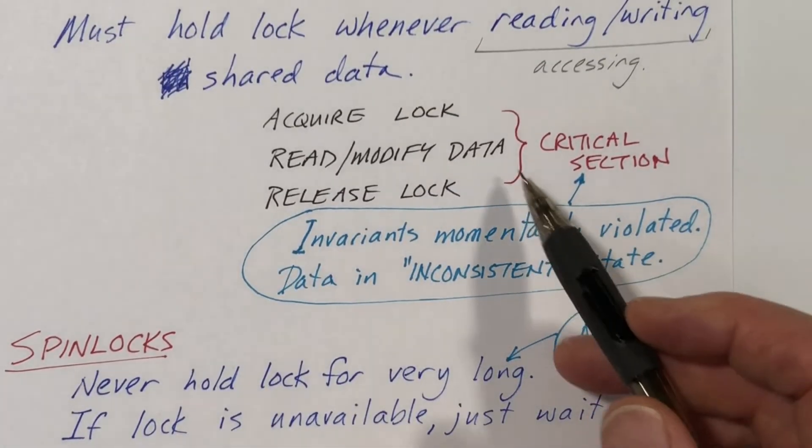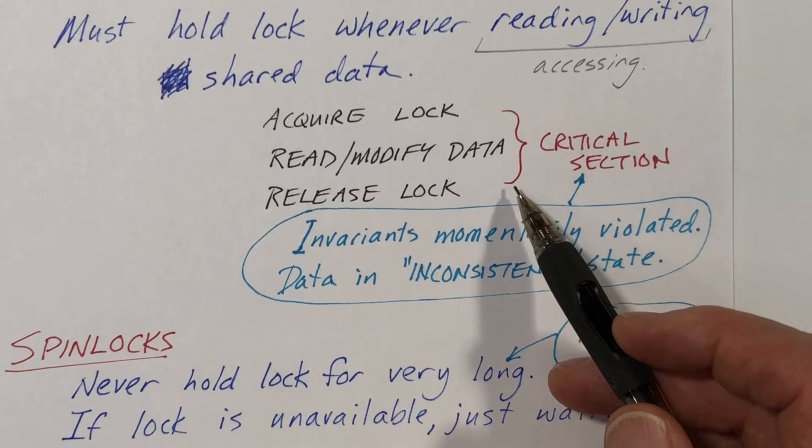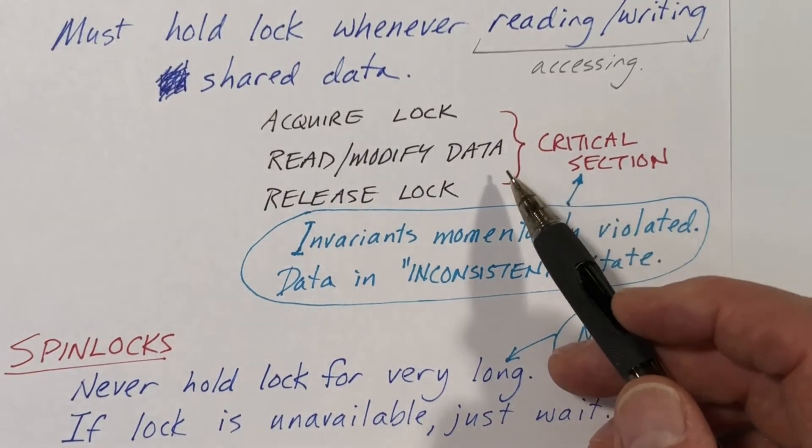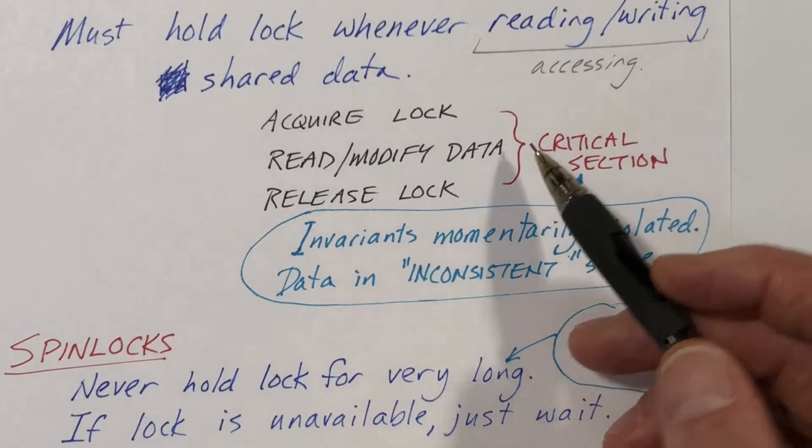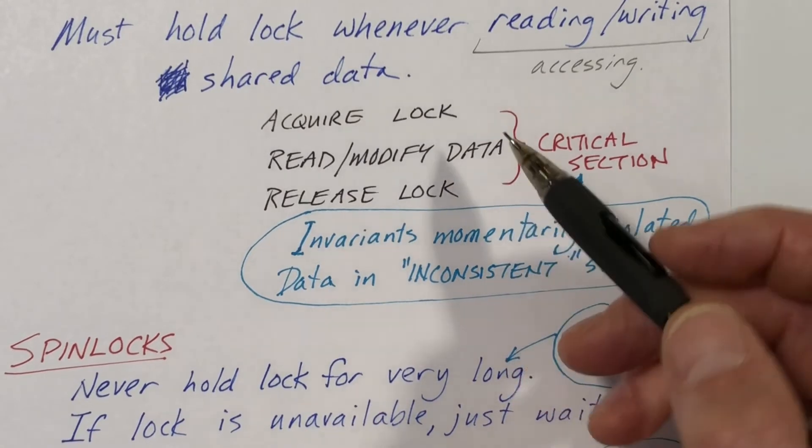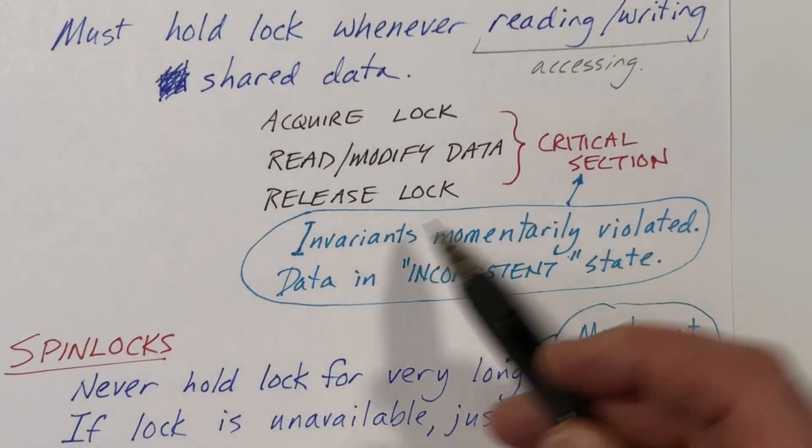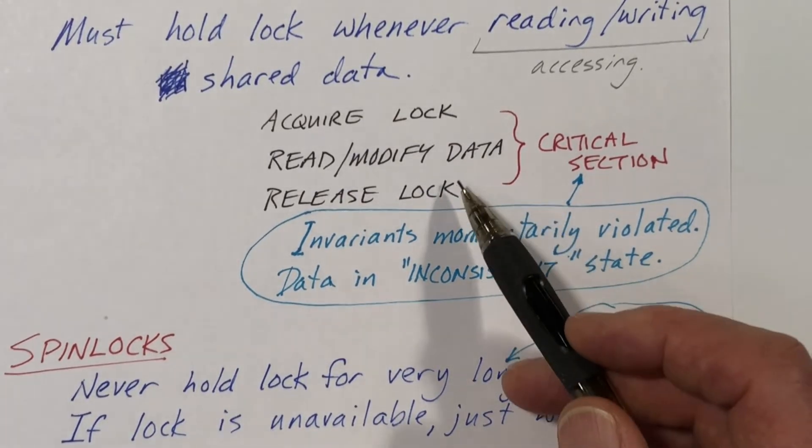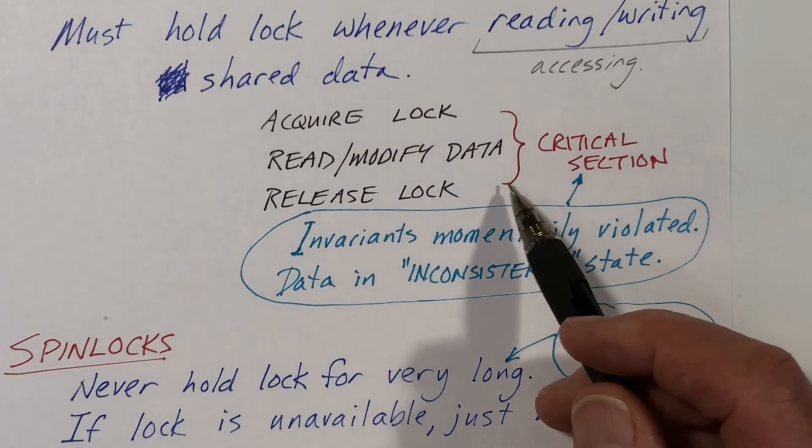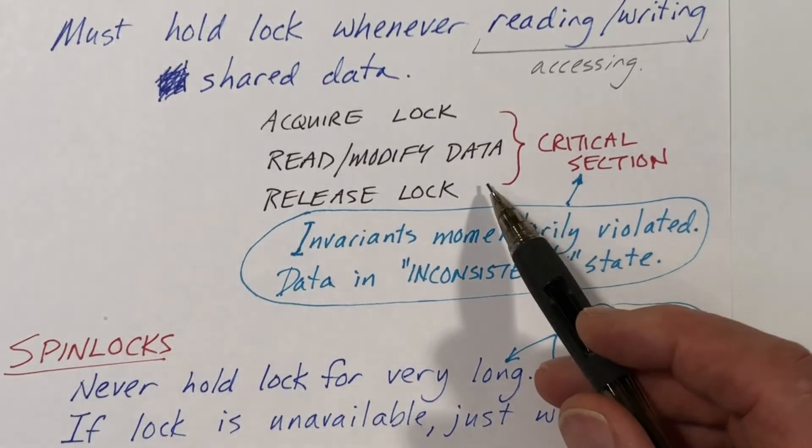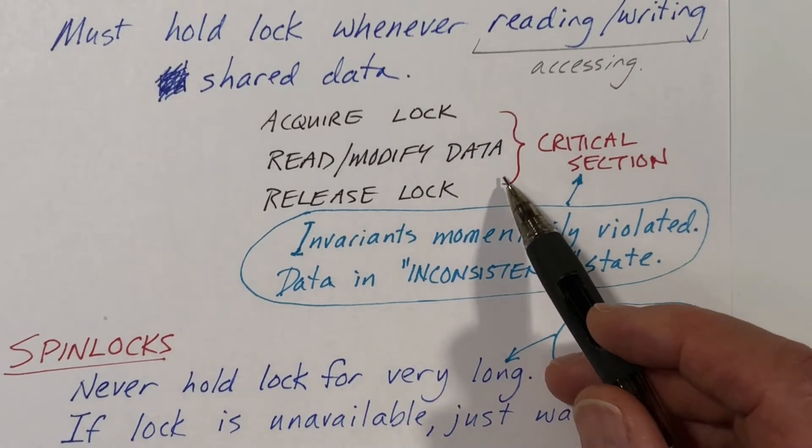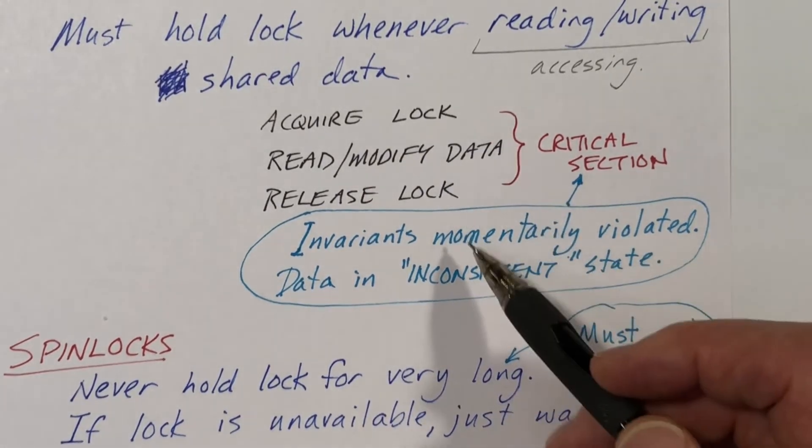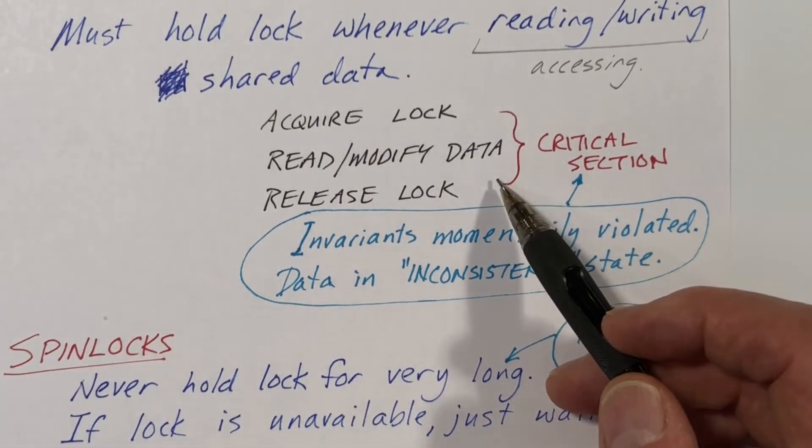So with data there are invariants that describe what the data is supposed to be like, or the invariants that describe what is true of the data structure. Within the critical section, we are modifying the data, and so momentarily these invariants may be violated and usually are violated. But before we release the lock, we have to get the data in its consistent form because other threads may access it the moment we release the lock. So we also talk about the data being in an inconsistent state within the critical section.